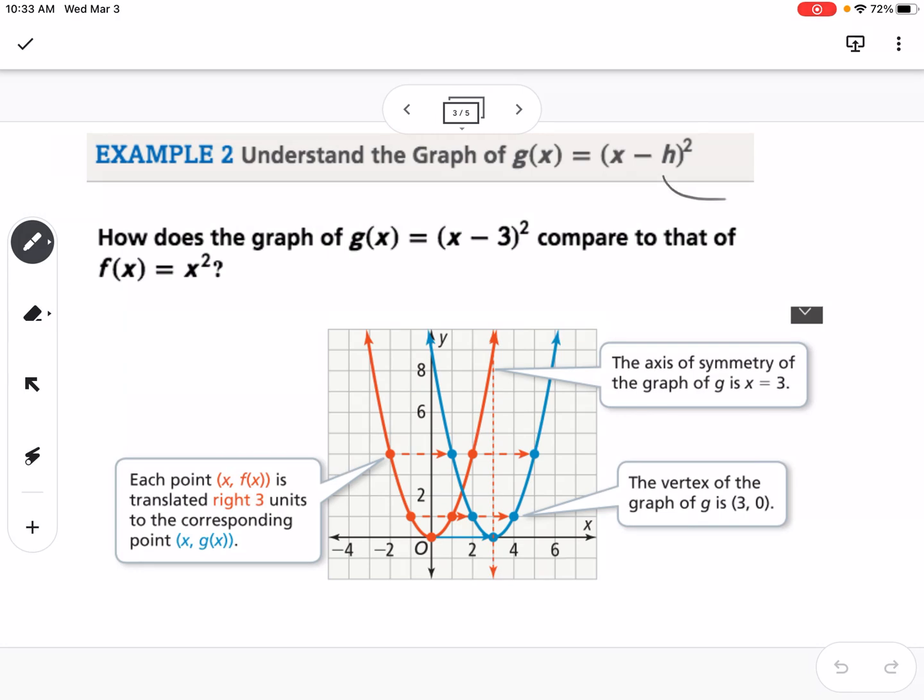The next question is, what happens if you have a number that's inside the parentheses with the x? So (x - h)². So we're asking, how does the graph of g(x) = (x - 3)² compared to that of f(x) = x²? So x² is our red graph, and (x - 3)² is our blue graph. So you can see from this picture that (x - 3)² shifted it to the right 3.